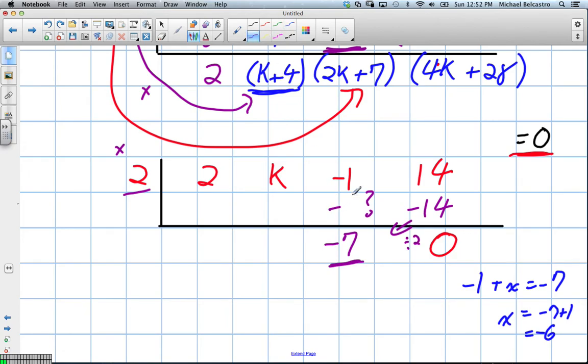When we move it over, x equals negative 7 plus 1, negative 6. Excellent. So our value would be negative 6. Same idea. To get back here, we would divide by 2. Negative 3.